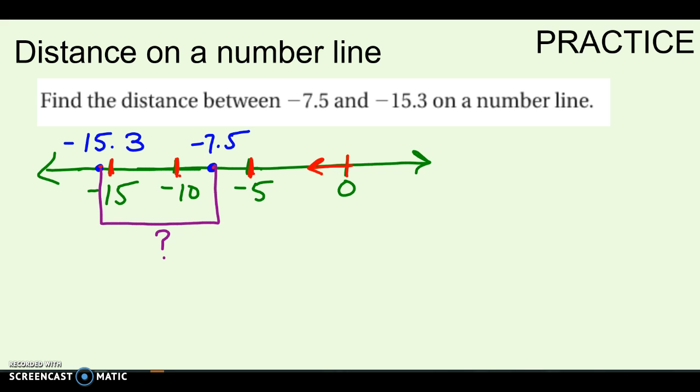Go ahead, finish the problem, find that distance between negative 15.3 and negative 7.5, and then we'll check. I've come over here, and I did the work. I just found the difference between the two numbers, and I got 7.8. And you may be thinking, well, should that be positive or negative? But if it's a distance between two points, it has to be positive. They're 7.8 apart. So it's just 7.8. That's it for this.